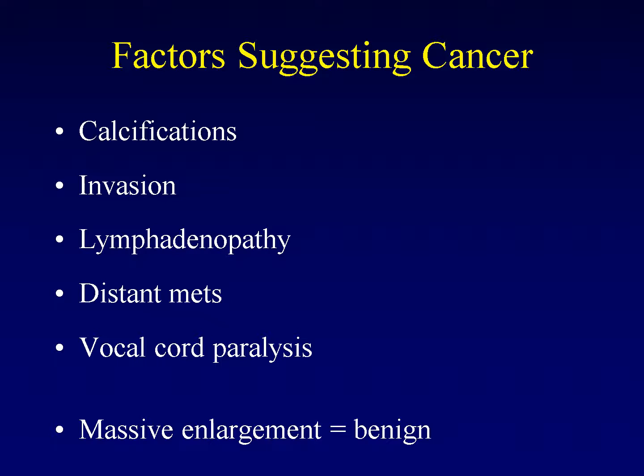Invasion is another feature. The thyroid capsule is a very good barrier, and adenomas simply enlarge the capsule. If there is invasion of surrounding structures, that suggests cancer. If there is regional lymphadenopathy, obviously this is worrisome. Distant metastases and also vocal cord paralysis are important signs. Extremely large adenomatous goiters can occur without causing vocal cord paralysis, so if you see vocal cord paralysis, it is strongly suggestive of invasion of the recurrent laryngeal nerve, and even in the absence of other malignant signs should prompt a search for thyroid cancer.